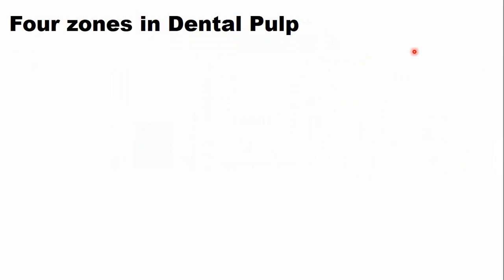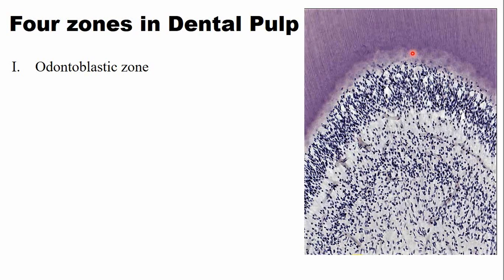Histologically there are four zones within the dental pulp. Number one is the odontoblastic zone. This is a longitudinal section of the histology of the dentine-pulp complex. These are the dentinal tubules. These are the odontoblast cell bodies lining the periphery of the dental pulp, and the processes are inside the dentinal tubules. So these odontoblasts lining the periphery of the dental pulp form the odontoblastic zone.